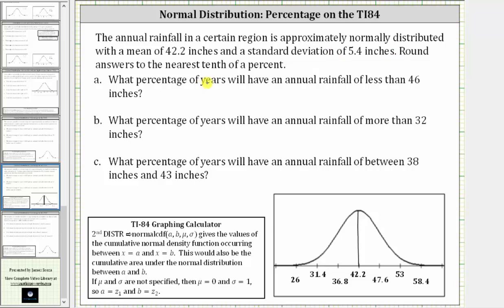To save some time, I've already set up the normal distribution curve below where we have the mean of 42.2 at the center of the distribution and the horizontal axis is scaled by the standard deviation of 5.4.